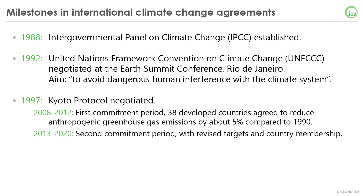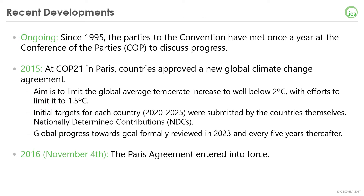The second commitment period, 2013–2020, allowed countries to revise targets and for some of them to join the Kyoto Protocol. Since 1995, the parties of the Convention have met once a year at the Conference of the Parties, the famous COP, to discuss progress. At COP21 in Paris, countries approved the new Global Climate Change Agreement. The aim was to limit the global average temperature increase to well below 2 degrees Celsius, with efforts to limit it to 1.5 degrees Celsius. It is an agreement for all parties, with flexibility for developing countries. The initial targets for each country, covering 2020–2025, were submitted by the countries themselves and are known as Nationally Determined Contributions, NDCs. Global progress toward the goal is to be formally reviewed in 2023 and then every 5 years. The agreement was adopted in 2015 and came into force in 2016. Requirements for entry into force were ratification by 55 countries accounting for 55% of global emissions.